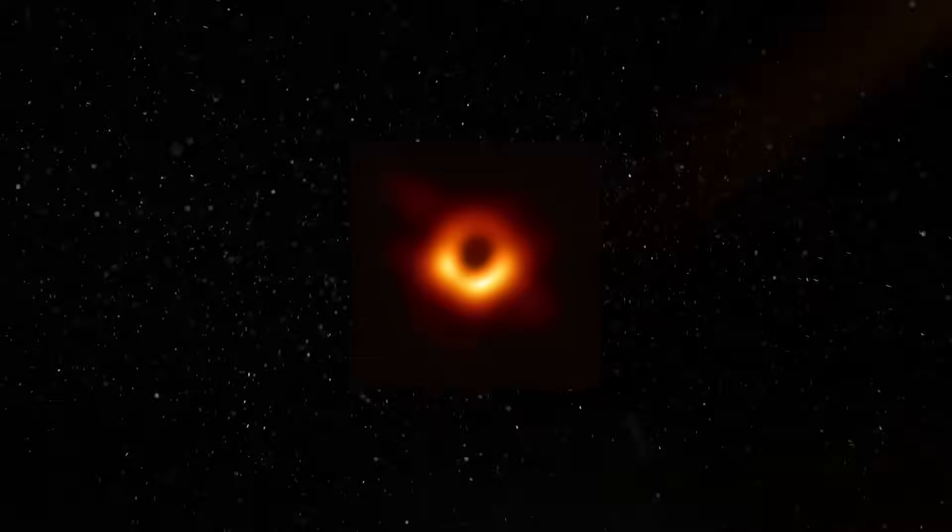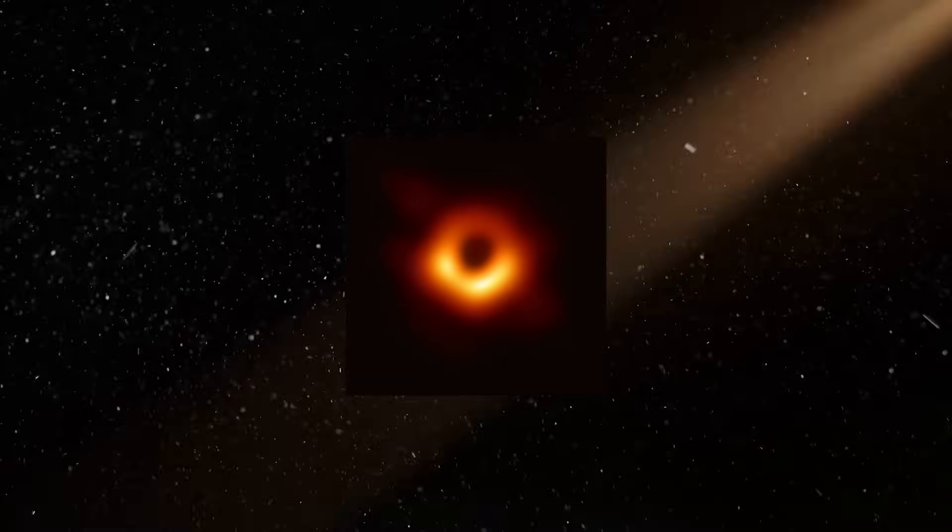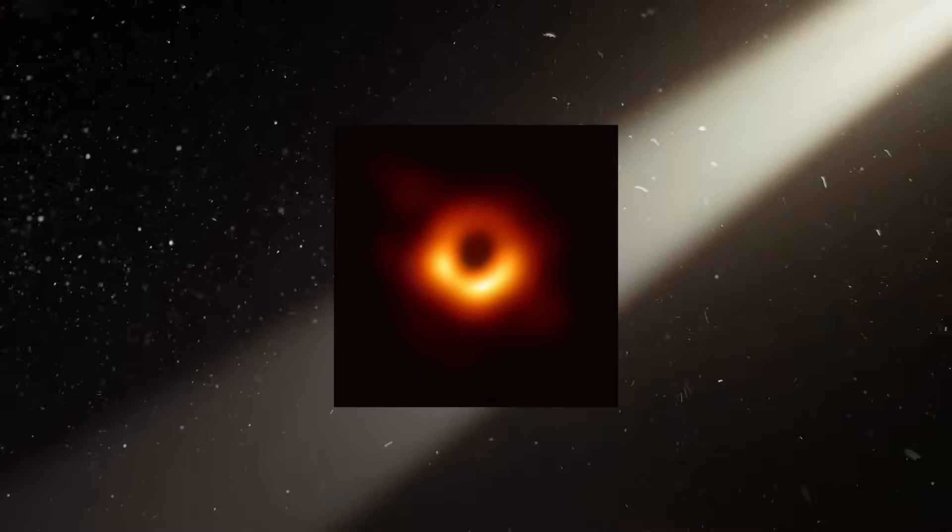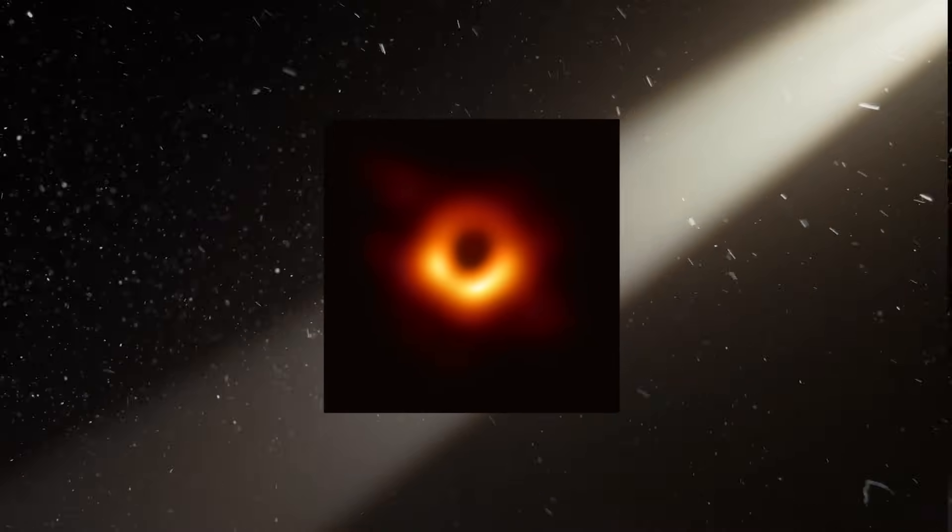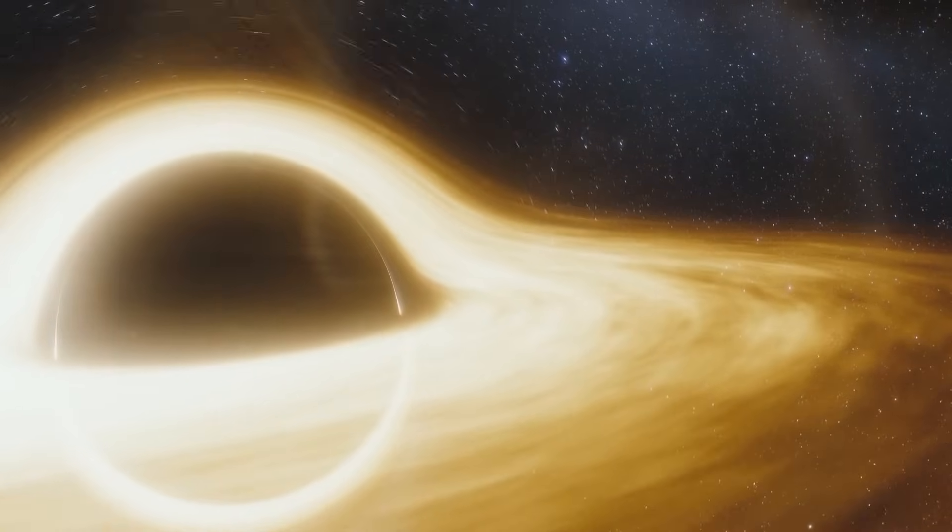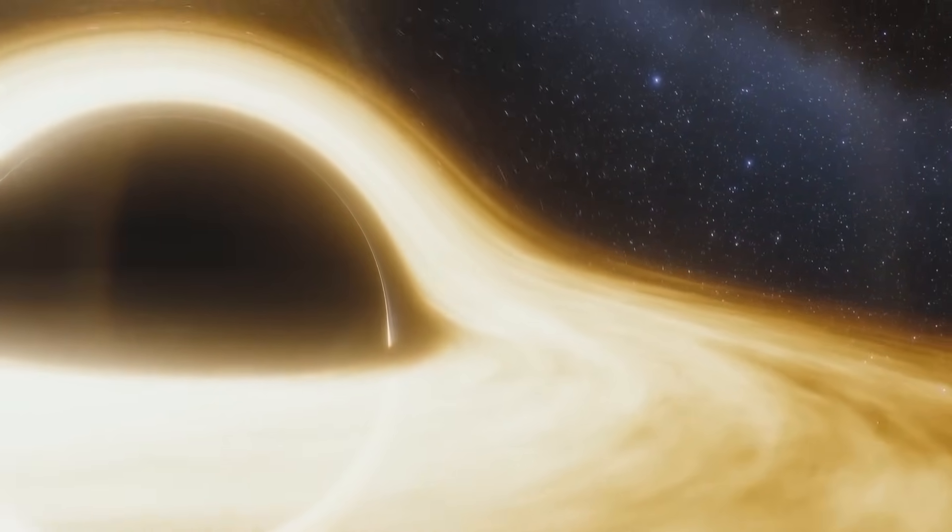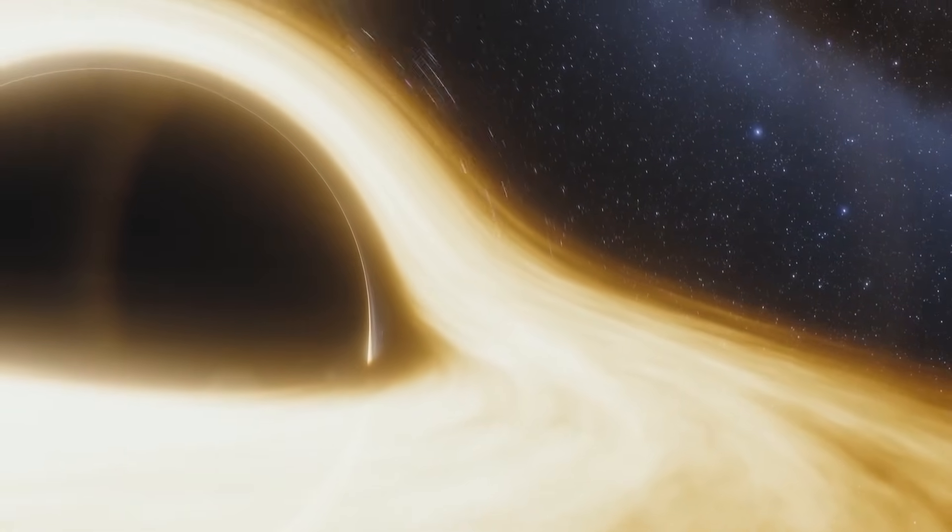The Event Horizon Telescope created an image that not only visually represented the black hole, but also revealed important information about how the black hole behaves. By mapping the sudden disappearance of light particles called photons, scientists gained valuable insights into the nature of black holes.